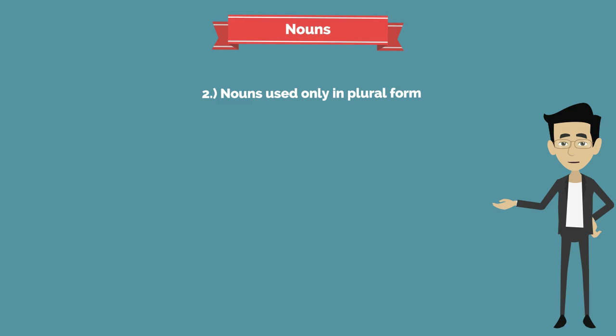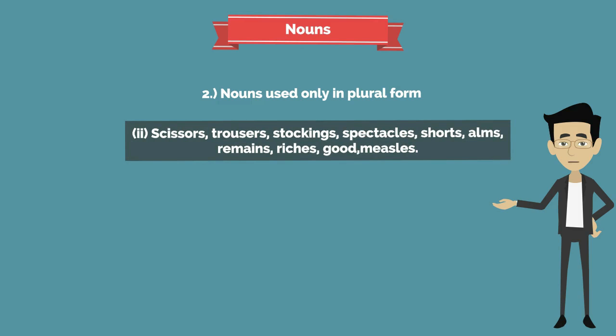Second group of plural-only nouns: scissors, trousers, stockings, spectacles, shorts, arms, remains, riches, goods, measles.